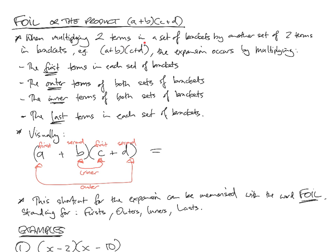When you're multiplying two terms in a set of brackets by another set of two terms in brackets, the expansion occurs by multiplying the first terms in each set of brackets, the outer terms of both sets, the inner terms of both sets, and the last terms in each set of brackets, and then adding those results together.